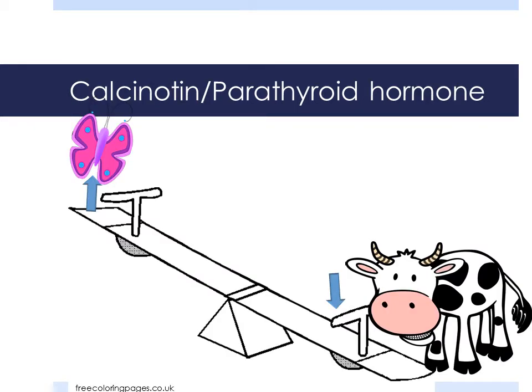Calcitonin and parathyroid hormone balance each other out, keeping the blood calcium level at an optimum level — it's all about homeostasis. The thyroid secretes calcitonin to force calcium into the bone. The parathyroid glands, embedded in the thyroid, balance calcitonin with parathyroid hormone, which pulls calcium out of the bone. Think of it like this: calcitonin puts calcium in the bone; the four parathyroid glands fly away — or parathyroid — and the calcium is pulled out of the bone.